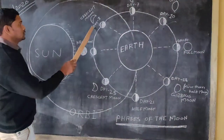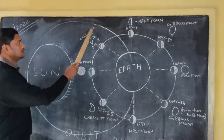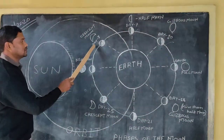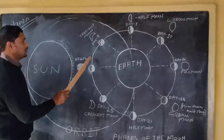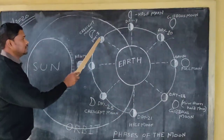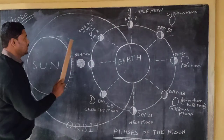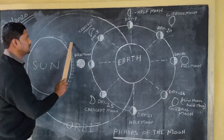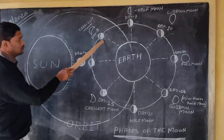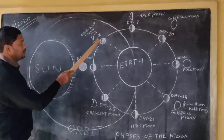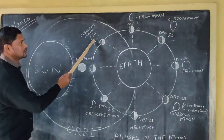Then after the next three days, we have the crescent moon. As the moon is moving from the new moon position — one, two, three days — it has moved here. Now we are here on the earth, and the moon is getting sunlight on this part, and we are able to see a small portion of the moon from here. So this is known as the crescent moon.